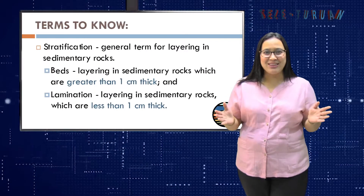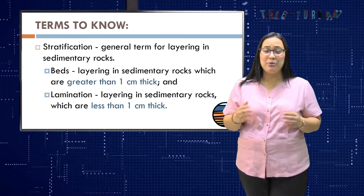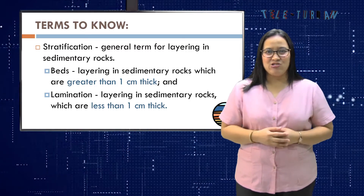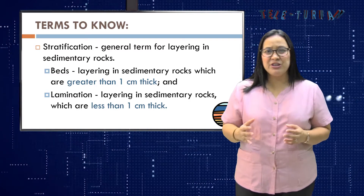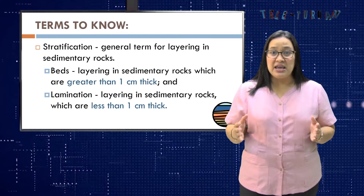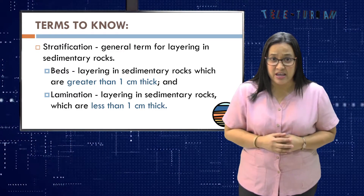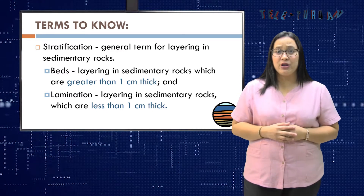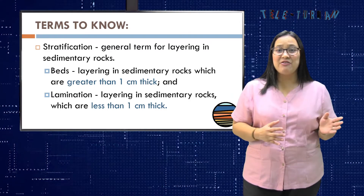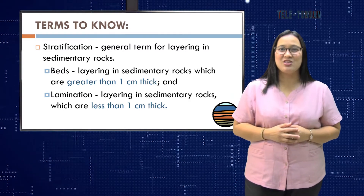But before that, let us define first what is stratification to help you better understand our lesson. Stratification is a general term for layering in sedimentary rocks. When layering of sedimentary rocks is greater than 1 cm thick, it is referred to as beds. Lamination is the layering in sedimentary rocks which are less than 1 cm thick.